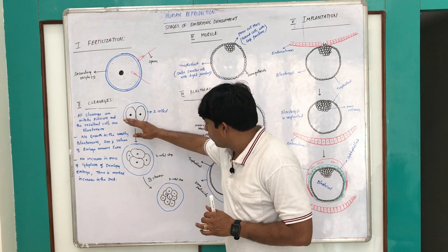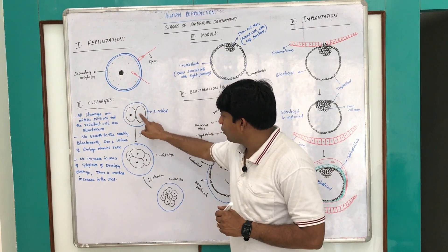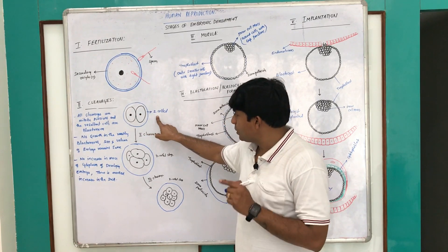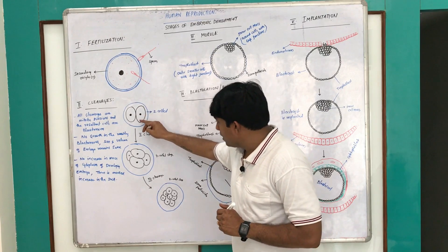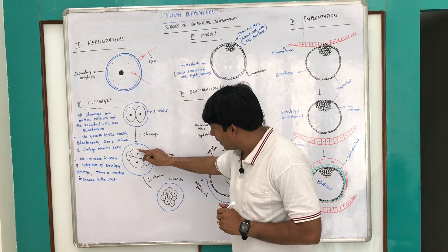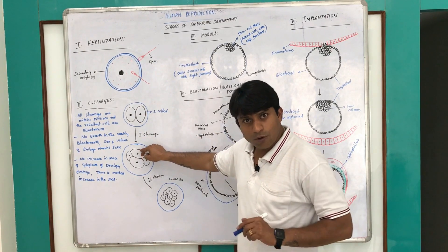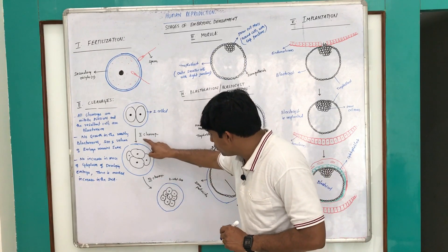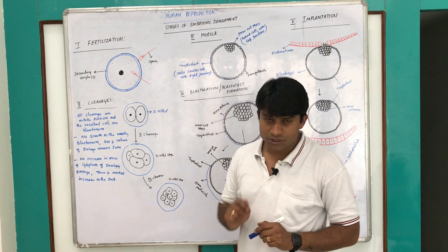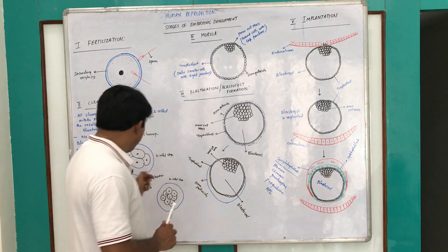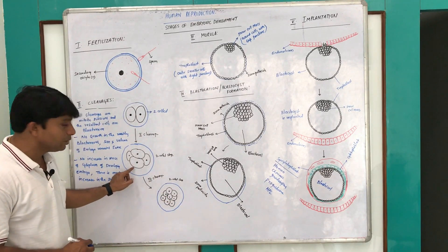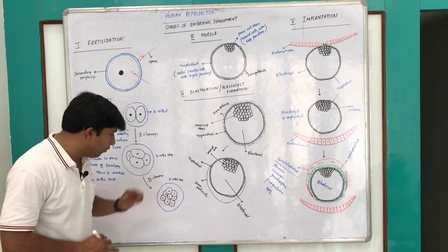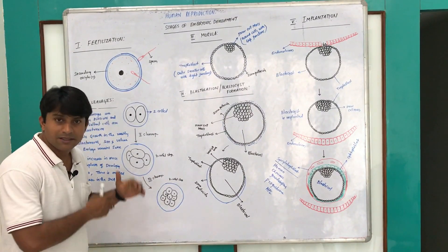This first cleavage furrow results in formation of two cells, which is completed 30 hours after fertilization. The first cleavage furrow is followed by the second. The second cleavage furrow is also meridional, which divides the zygote into four cells. This is followed by the third cleavage, which is horizontal to the second cleavage and results in formation of eight cells.